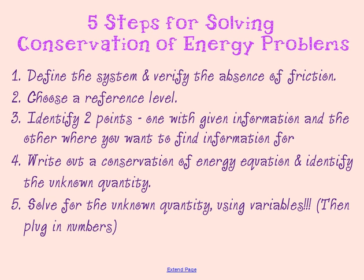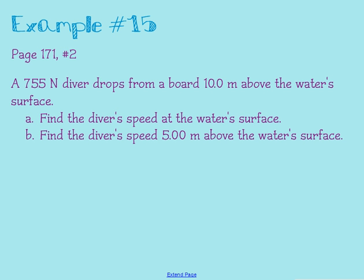So let's see how those five steps play out in a problem. In this problem, we have a diver who's dropping from a board that is 10 meters above the water's surface. We'll start by trying to find the diver's speed at the water's surface, immediately before he enters the water. The first thing is to define your system. In this case, our system is just the diver — sometimes we may have multiple objects, but here it's just the diver.